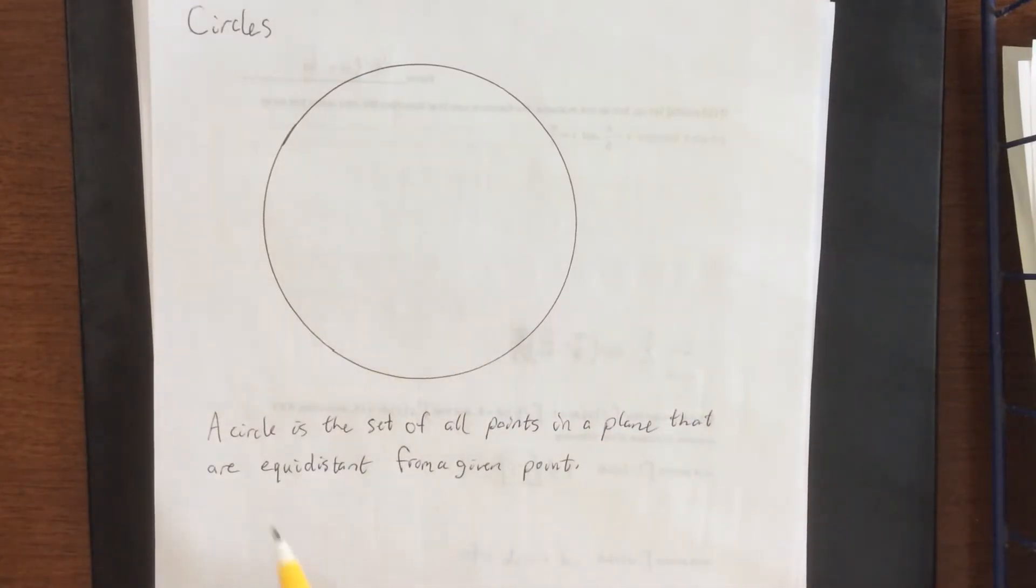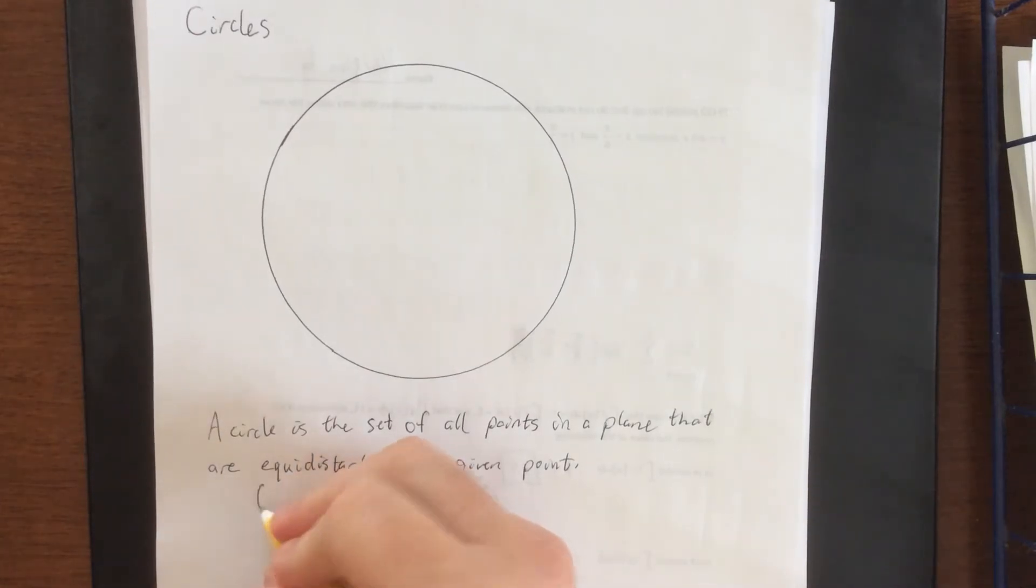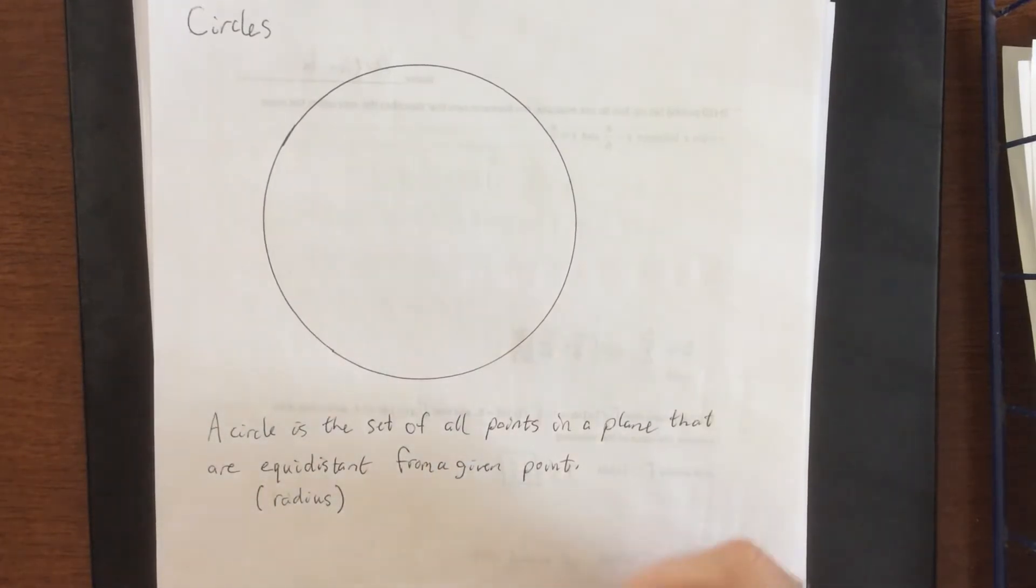Both that distance that we're referring to with the equidistant and the point have special names. That distance is referred to as the radius, and the point is referring to the center.